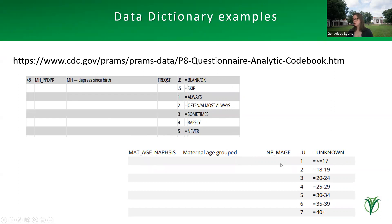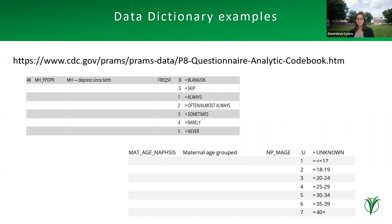These are great examples of how to format a data dictionary if you're building your own database. Note that surveys like PRAMS group continuous variables in raw data to protect respondent privacy. PRAMS also provides an analytical data dictionary about coding as well as the full survey with complete question wording, which can help during study design when choosing questions that answer your research question. You can use these for secondary data analyses or create your own for original data.